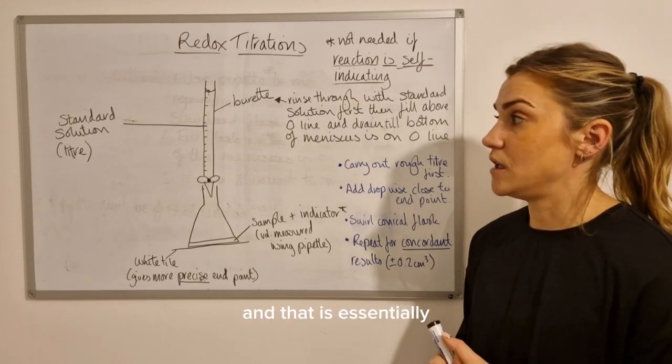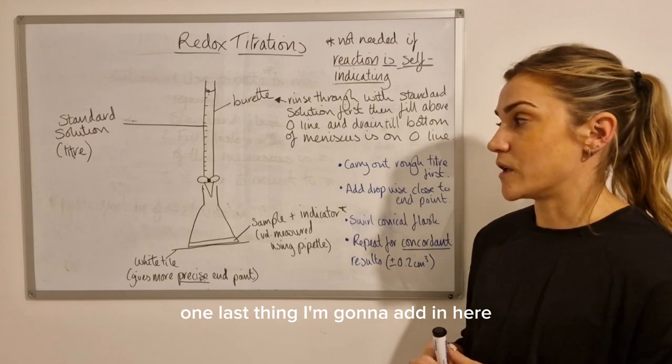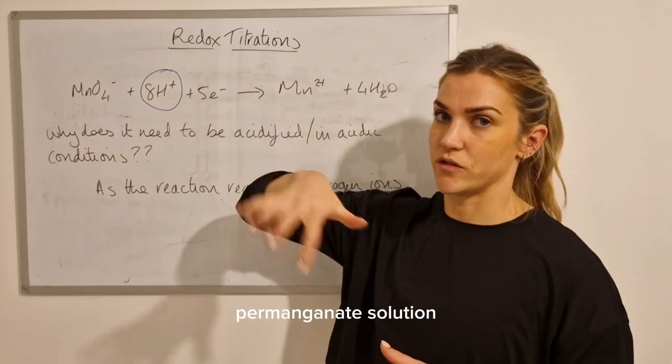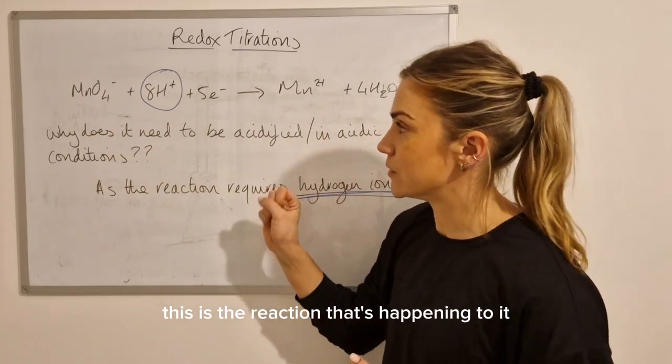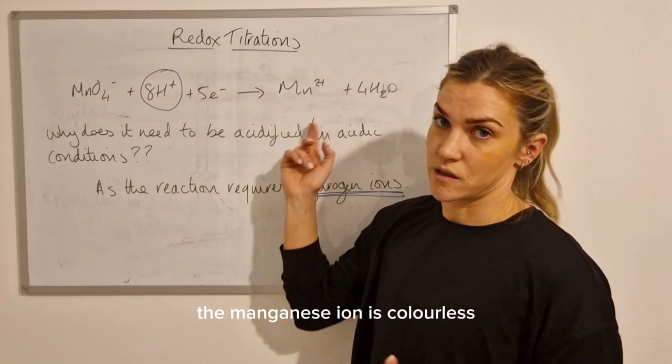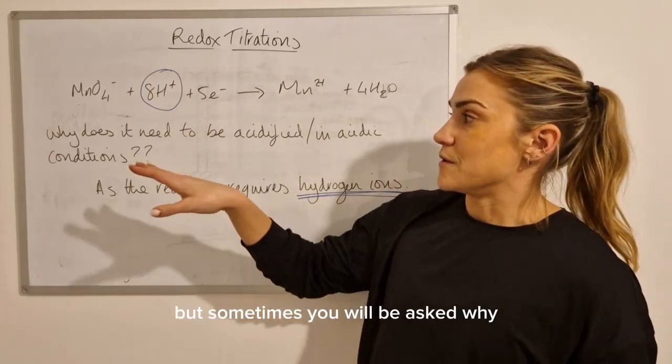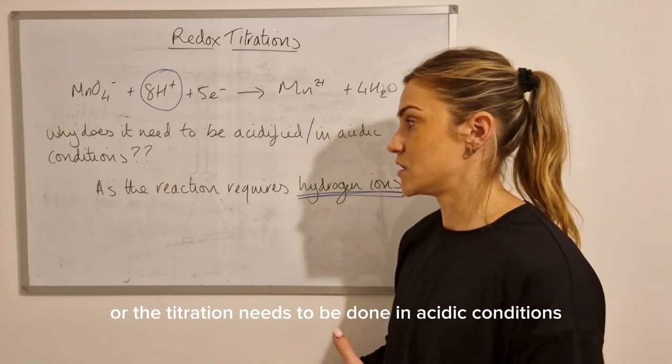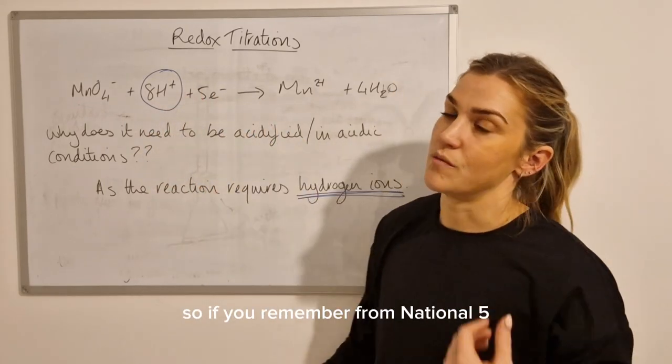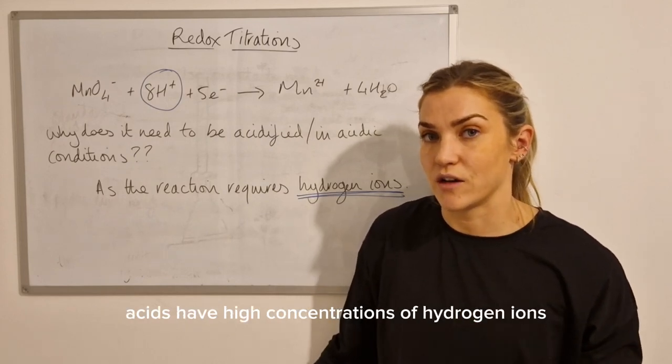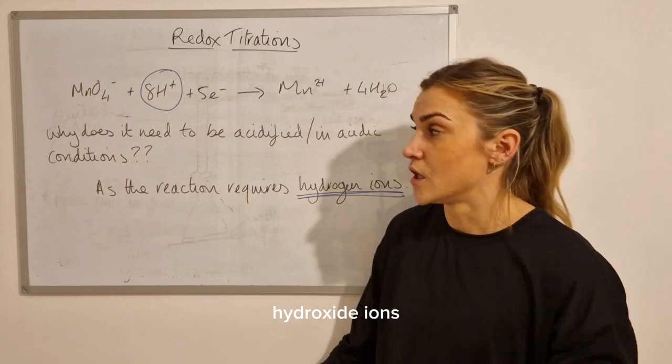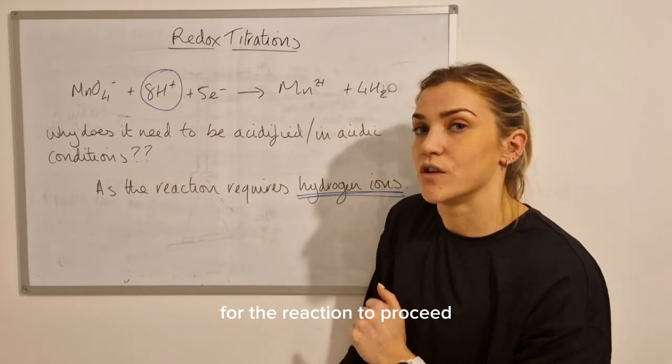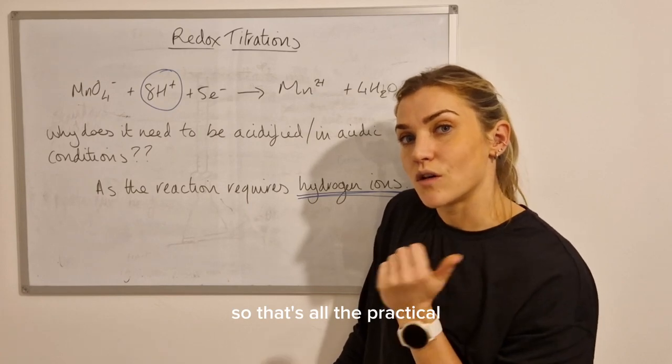And that is essentially the practical aspects of titrations. One last thing that I'm going to add in here - this is an electron half equation for the reaction with permanganate. When you're using permanganate solution and it's the standard solution, this is the reaction that's happening to it. So this permanganate ion, MnO4^- + 8H^+ + 5e^- → Mn^2+ + 4H2O, has the purple color. The manganese is colorless, and that's why you get the color change. But sometimes you will get asked why the potassium permanganate needs to be acidified or the titration needs to be done in acidic conditions. It's because the reaction requires hydrogen ions. If you remember from National Five, acids have high concentrations of hydrogen ions or low concentrations of hydroxide ions. So if you've got a reaction that needs hydrogen ions, it needs to be done in an acidic environment, otherwise there'll be not enough hydrogen ions for the reaction to proceed.